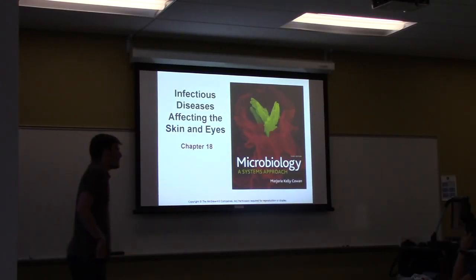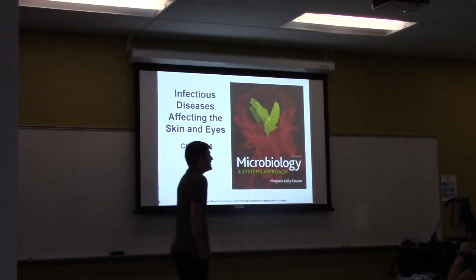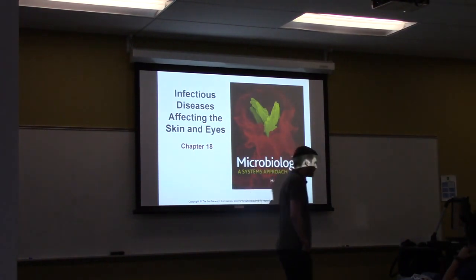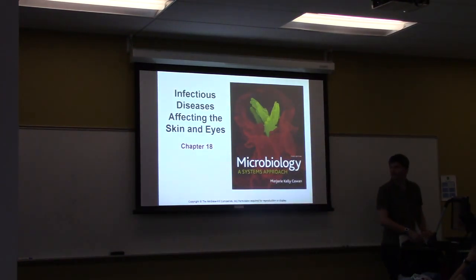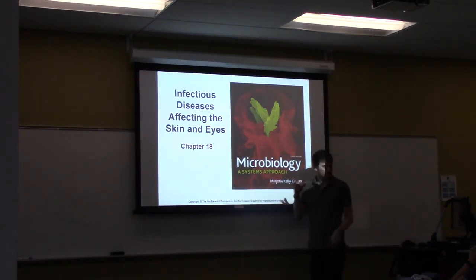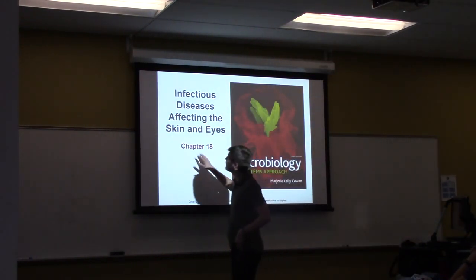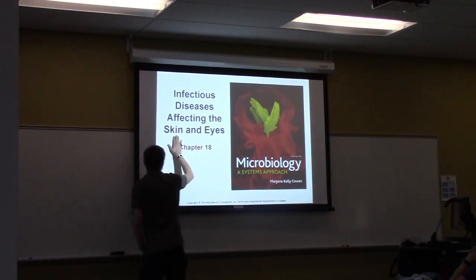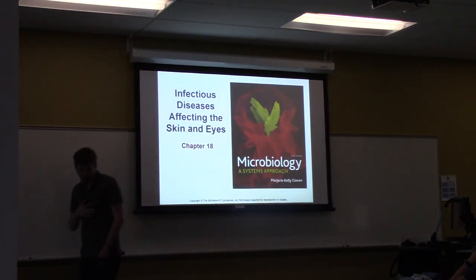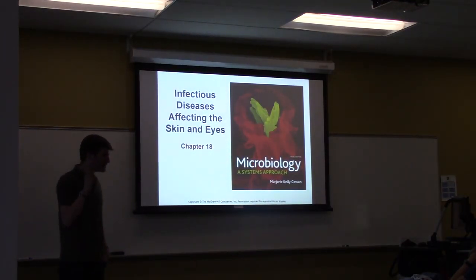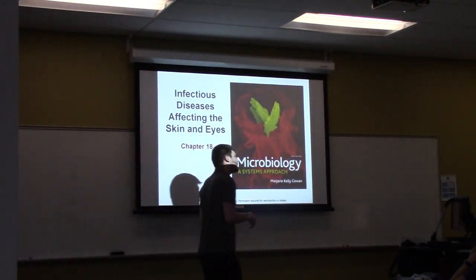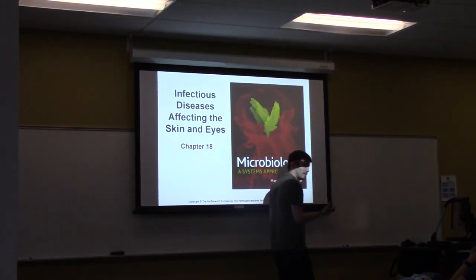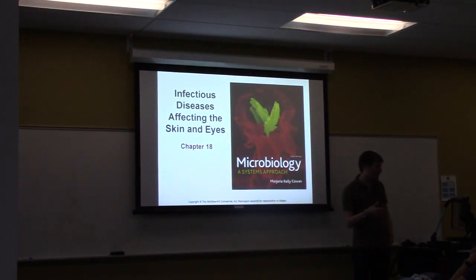Today we're going to be talking about chapter 18, which starts our lectures on infectious diseases. Your book organizes them by body systems, and today we're going to focus on diseases that target the skin and the eye. All of these chapters will be set up similarly: we'll first talk about anatomy, then normal commensals, then defenses, and then go through a bunch of different diseases.